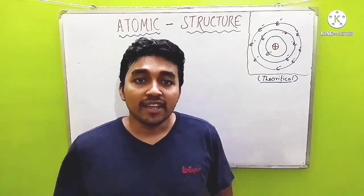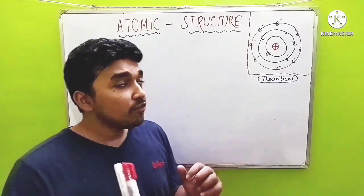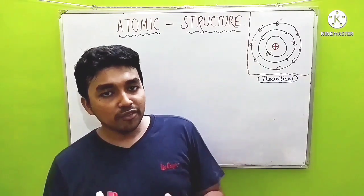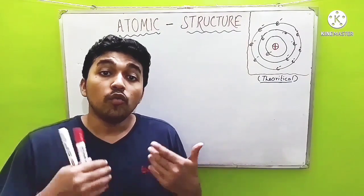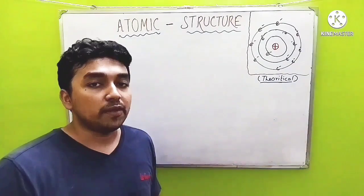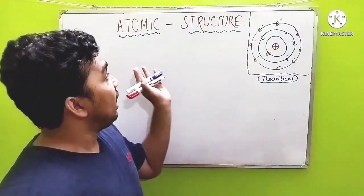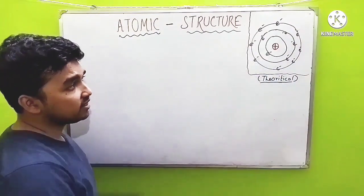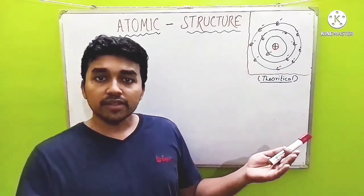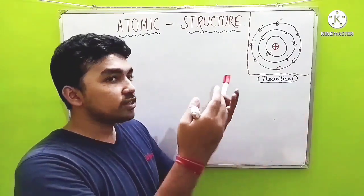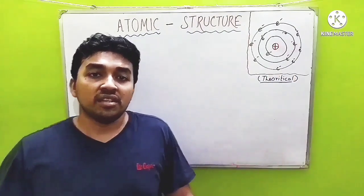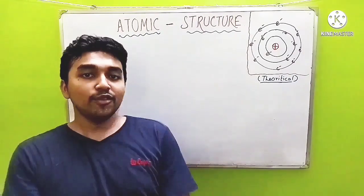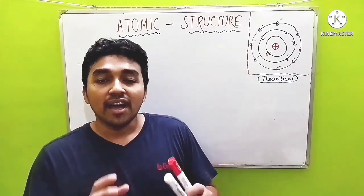Welcome everyone. In this video, we are going to overview the chapter of Atomic Structure. We are not going to discuss any topic in detail — we will just overview the whole chapter and see how we will continue studying it. First, see the structure of an atom. This is a picture of an atom — so yes, the atomic structure. But of course, you need to know how this structure of the atom came into being, and for that purpose you need to know all these topics.